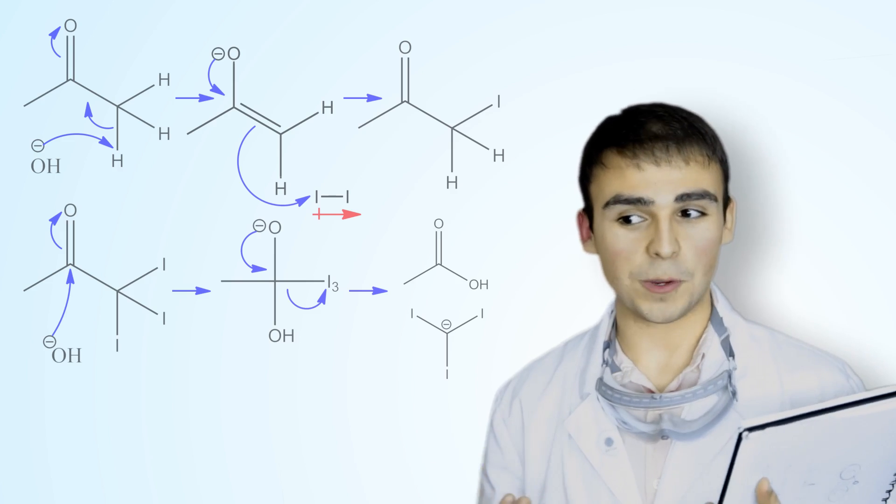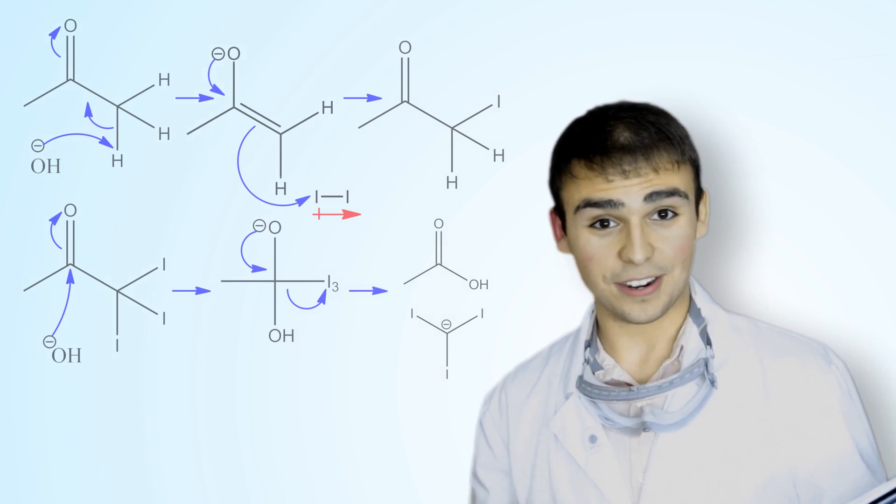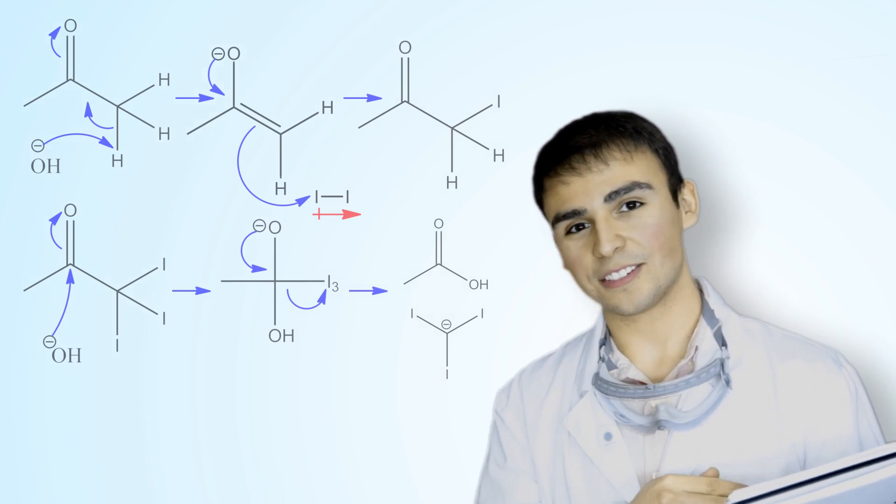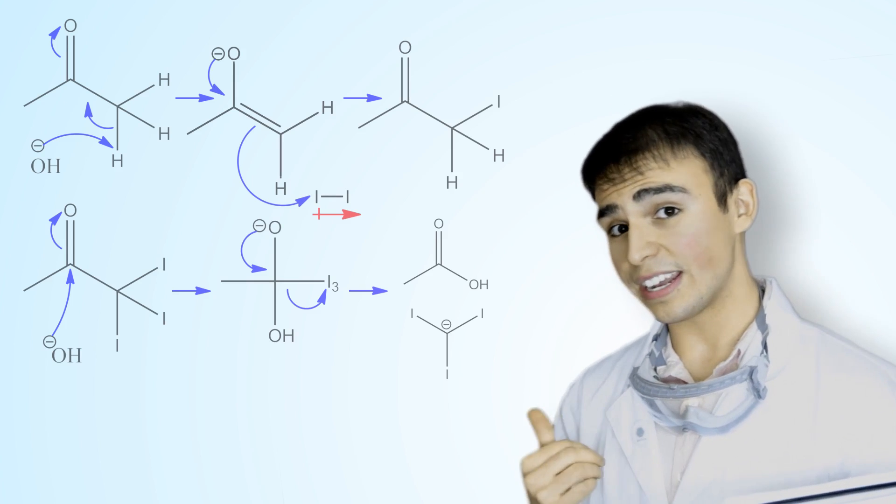In our case, since we used acetone, it will produce ethanoic acid, or vinegar. It will also produce a Lewis base, our good leaving group, which is the carbon triiodide anion.